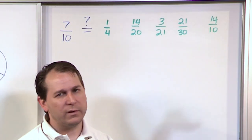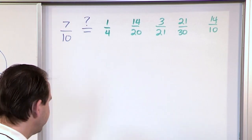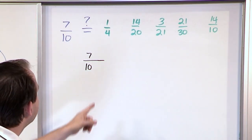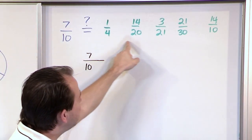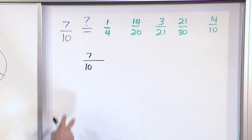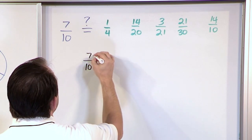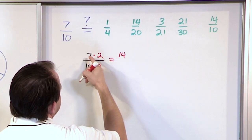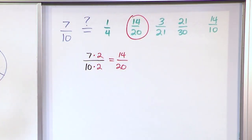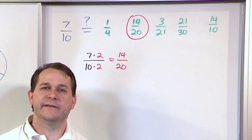So the way you do this: look at your original fraction, 7 tenths, and figure out what we need to multiply the top and bottom by. If I multiply the bottom times 2, I also have to multiply the top times 2. I get 14 over 20 — 7 times 2 is 14, over 20. And I look in this list and I actually have that one right there: 14 twentieths. So this fraction is equivalent to 7 tenths. It looks completely different, but it represents the same amount of pizza.